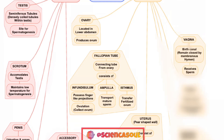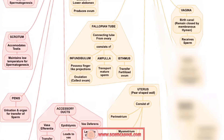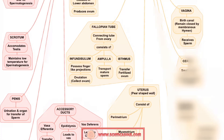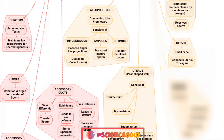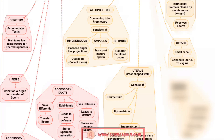The next part is the vagina, which is also called the birth canal and remains closed by the membranous hymen. The function of the vagina is to receive sperm. Next part is the cervix — it is a small canal that connects the uterus to the vagina. It is cylindrical-shaped neck of tissue located at the lowermost portion of the uterus, and is composed of fibromuscular tissues.